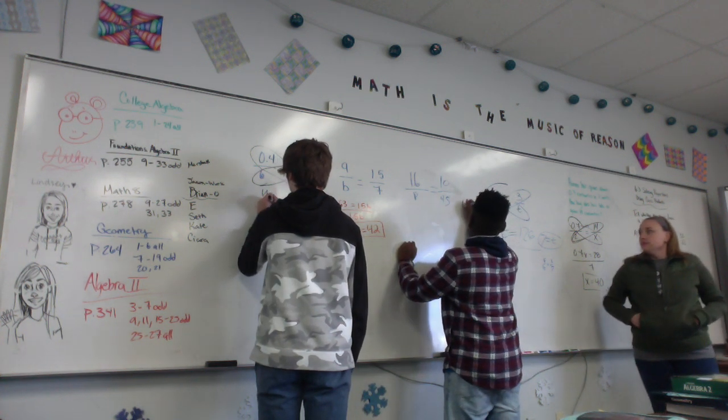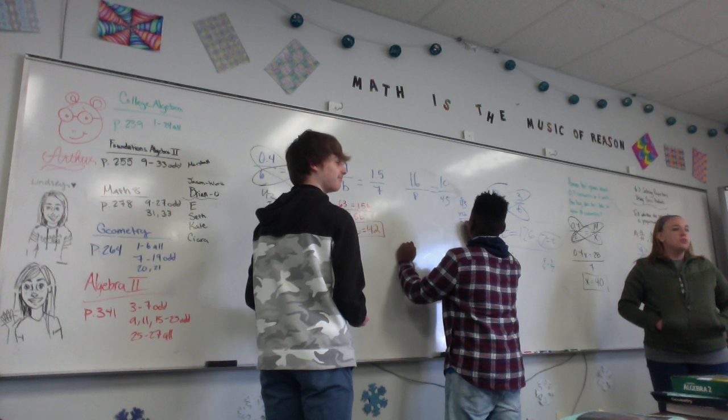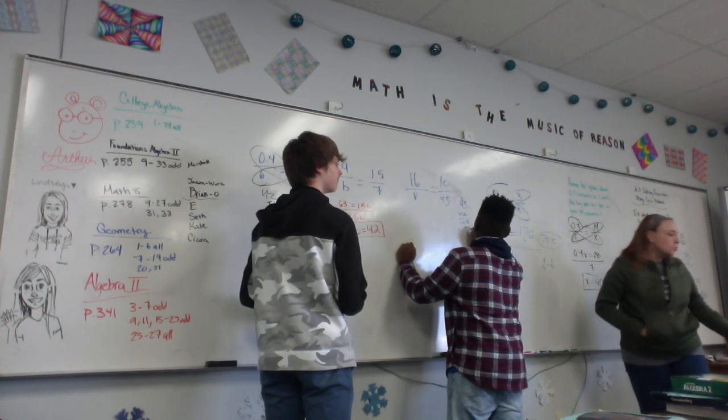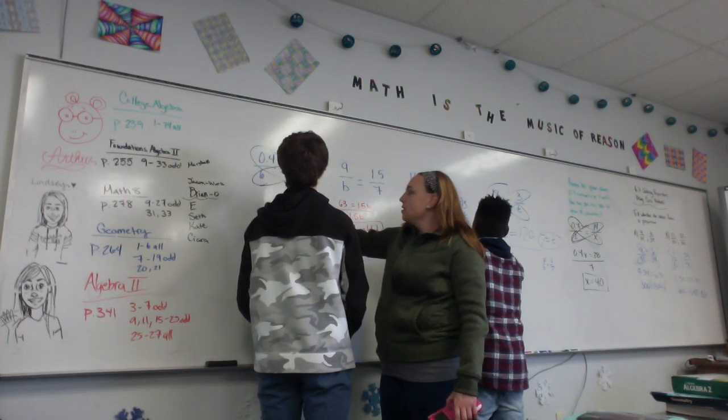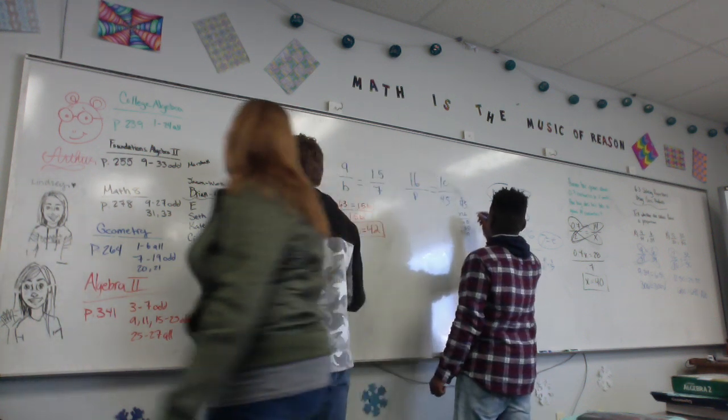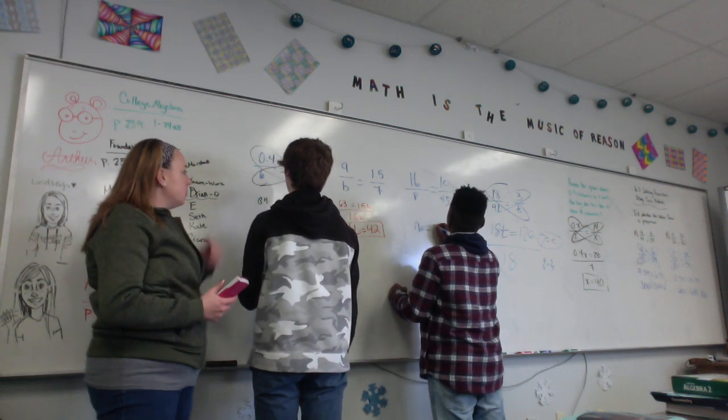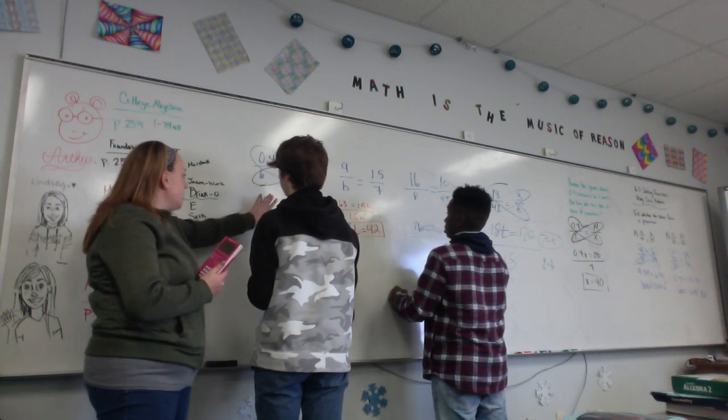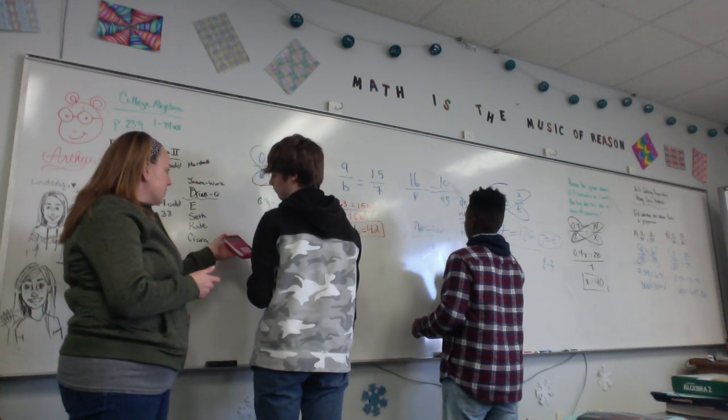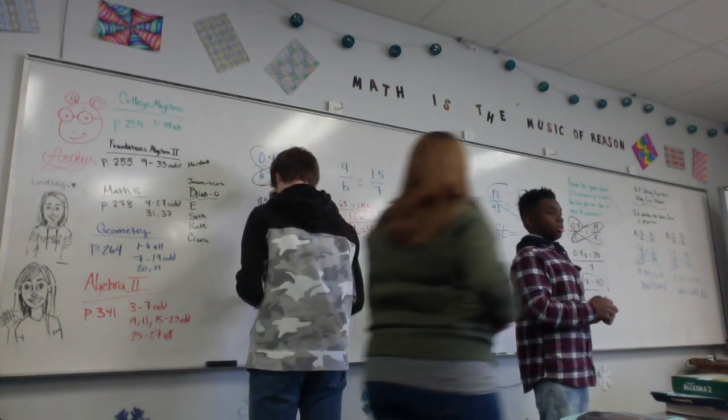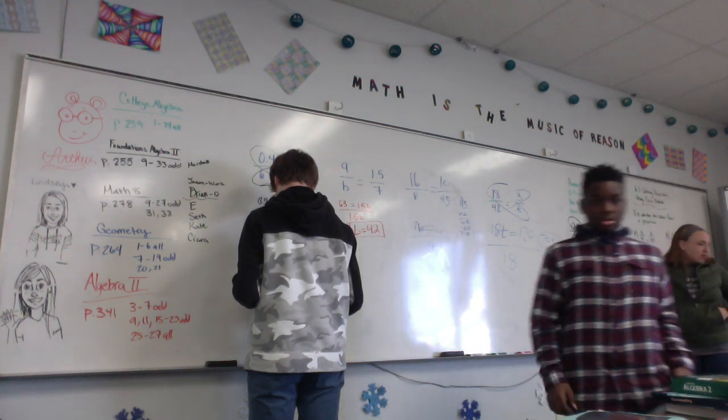You can reduce first if you want to, but you don't have to reduce. 0.4Z equals... You're doing fine. 0.4Z equals... You have to have a Z there. Six times 18. So Kate got 42 for B. Kate is correct on that. What is 17 divided by 10?